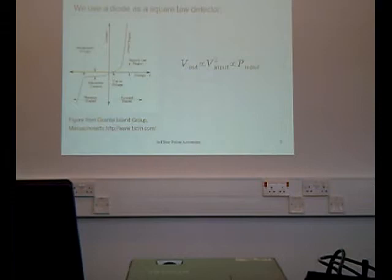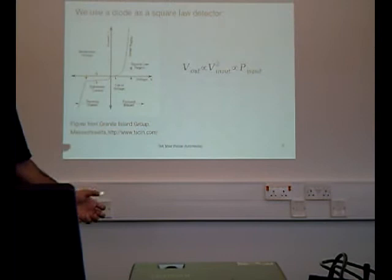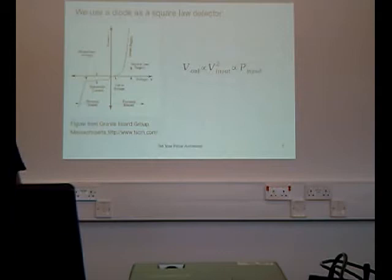We use a diode as a square law detector. Basically if we stay within the low voltage limit, the voltage from the diode is proportional to the square of input voltage, and that obviously is proportional to the power.